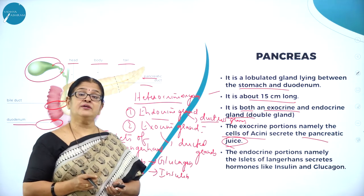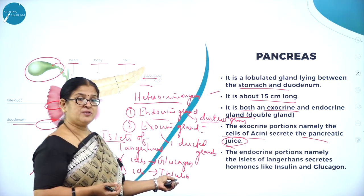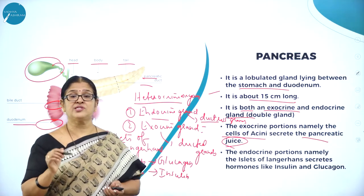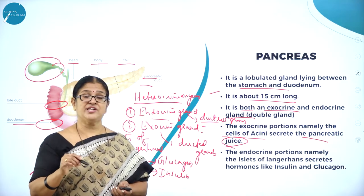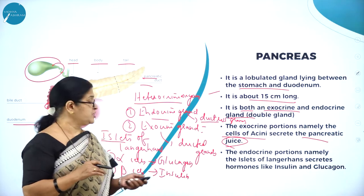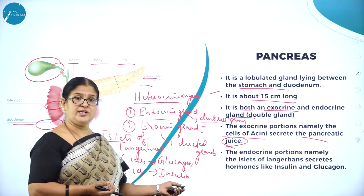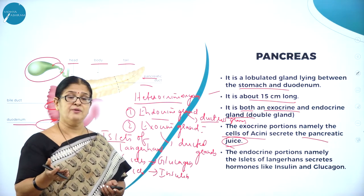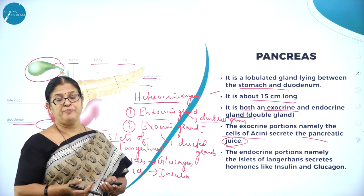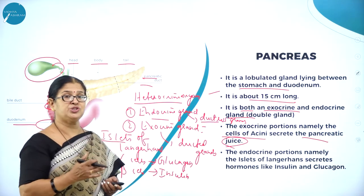When there is a rise in glucose level in the blood, the beta cells produce a hormone called insulin, which converts glucose back into glycogen stored in the liver. The liver not only produces bile juice for emulsification of fat but also acts as a storage organ. When glucose level is very high, islets of Langerhans produces beta cells which produce insulin to convert blood glucose into glycogen. When sugar level drops in the blood, glucagon converts glycogen stored in the liver back into glucose. This is how they maintain homeostasis by controlling the sugar level in the blood.